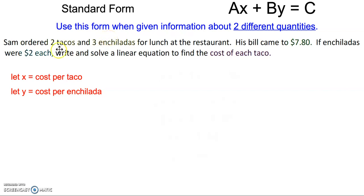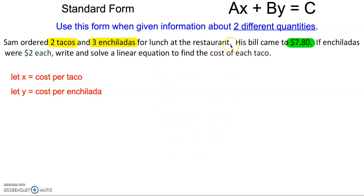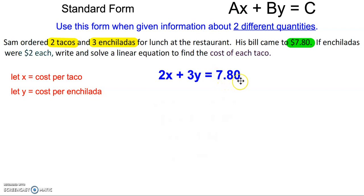We know it's going to cost something for each taco and something for each enchilada, and his total bill came to $7.80. So we've got two tacos, which means two times the cost per taco, and three times the cost per enchilada. So our equation looks like 2x plus 3y equals $7.80.